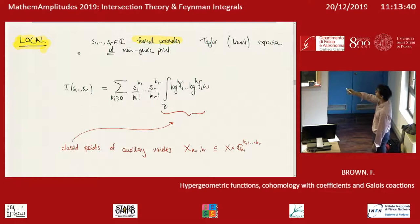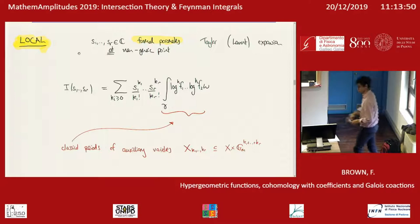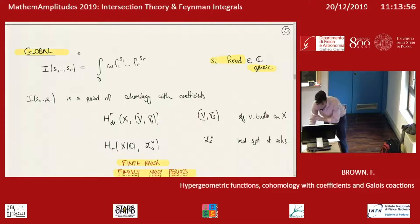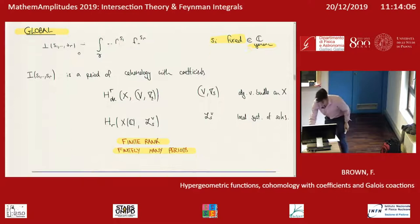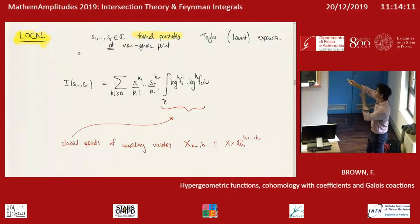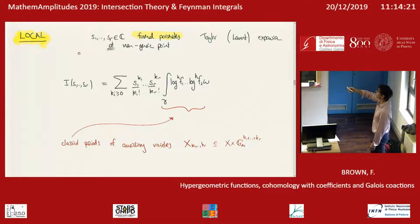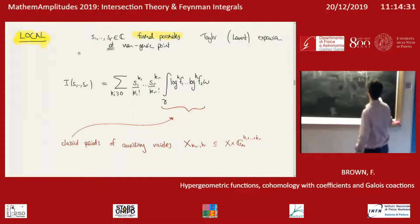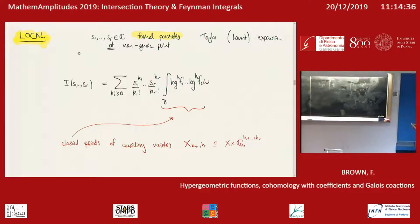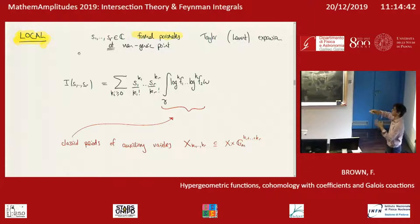The local setting is very different. Now we think of the parameters as formal parameters s_1 up to s_r — complex numbers — and we want to do a Taylor expansion at a point where something goes wrong. In the global picture, the s_i have to be generic; there are values of s_i for which the dimension of these groups jumps, and typically you want to avoid that. Here we're going to do a Taylor expansion at precisely the point where the ranks of these groups are not the generic one. We can Taylor expand very easily by replacing f^s with the exponential s log f, and we can naively do a Taylor expansion under the integral. But of course this is not right in general because we have poles in the s_i's and we have to take care of that.